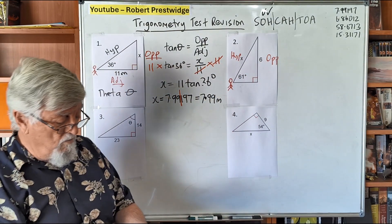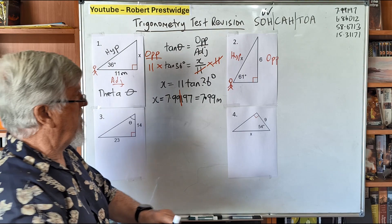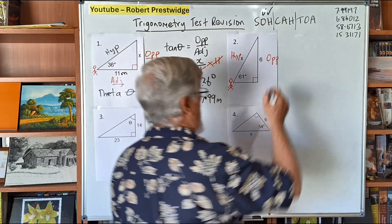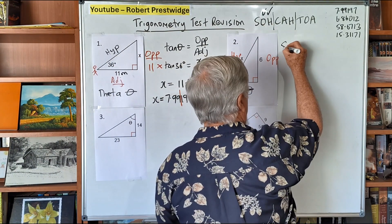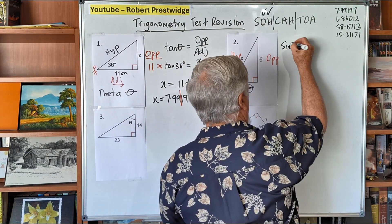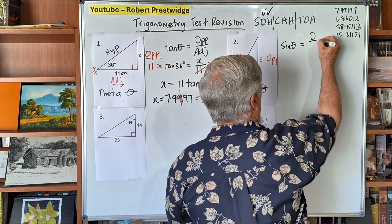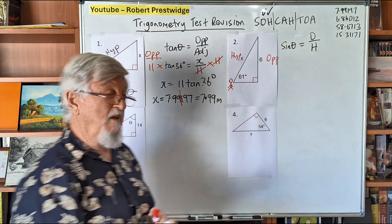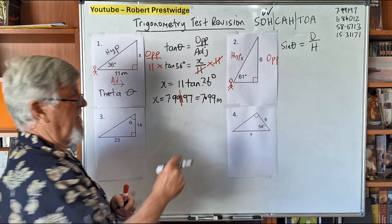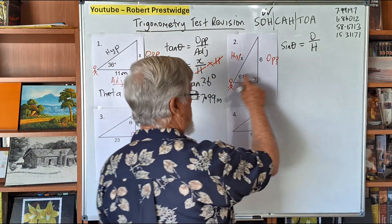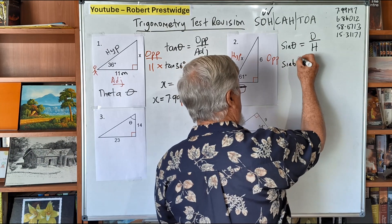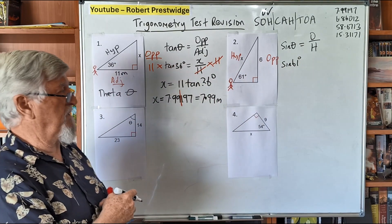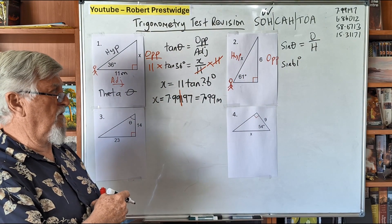So now if I write up the sine ratio rule — sine theta equals O for opposite over H for hypotenuse. Our angle is 61 degrees. Three things for three places — let's have a look at what we've got.